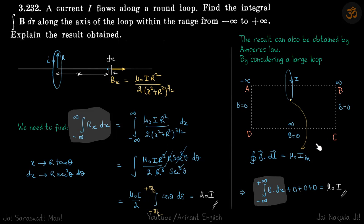At all these points and all these three parts of this rectangle, B is 0. So if you apply Ampere's law, B dot dl is equal to mu naught times i enclosed.